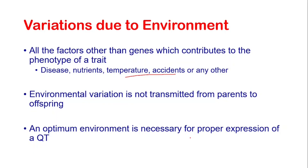For example, if an animal has a genetic potential to produce 10 litres of milk in a day but is not provided with an optimum amount of feed, would it be able to produce 10 litres? No, it will not, because milk production is a quantitative trait and it is also affected by environment — in this case, the environment was feed. Secondly, if that animal is under heat stress, it will also not be able to produce the maximum amount of milk. So both environment and genetics collectively cause variation in quantitative traits. And this was a brief lecture on variation in quantitative traits.